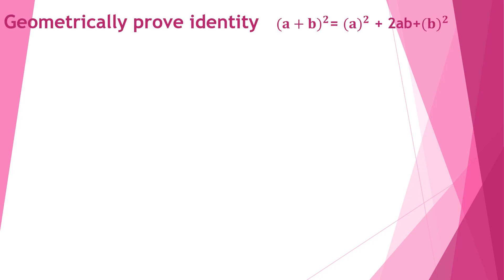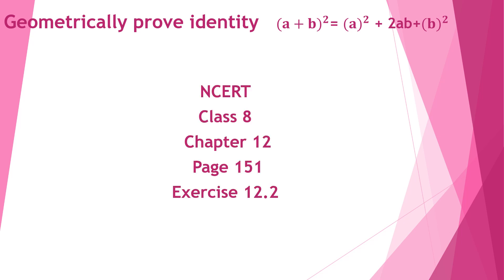Geometrically prove the identity: (a + b)² = a² + 2ab + b². This forms part of NCERT Class 8, Chapter 12, Exercise 12.2, page 151.